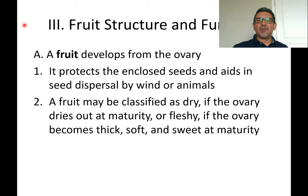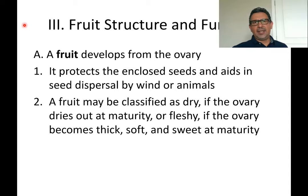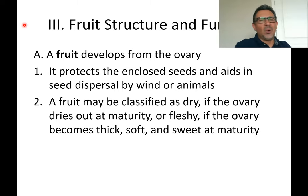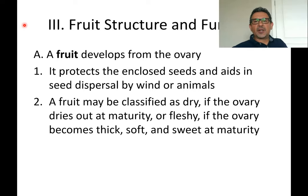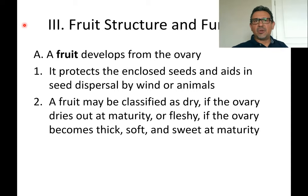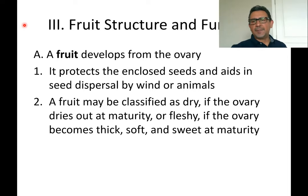Fruits can be dispersed not only by animals but also by wind and water — for example, coconuts can be seen drifting in oceans around the world. Fruits are classified as dry if the ovary dries out at maturity, or fleshy if the ovary wall remains thick, soft, and often sweet when the fruit is mature.